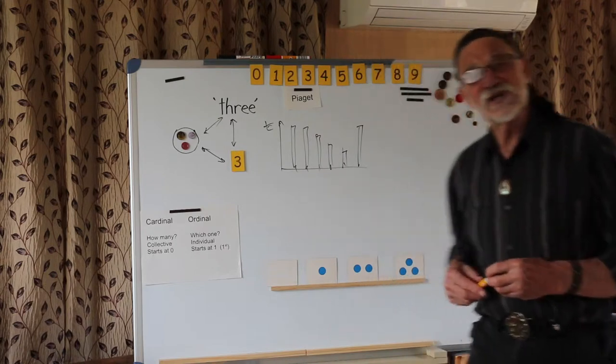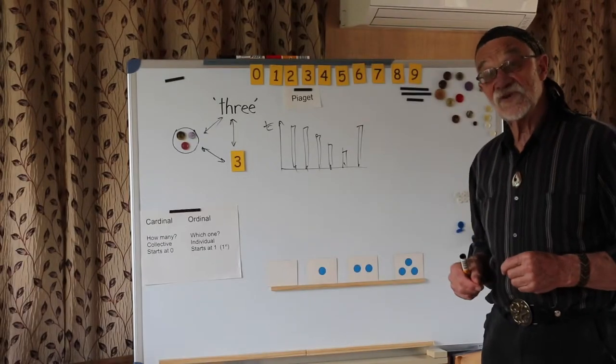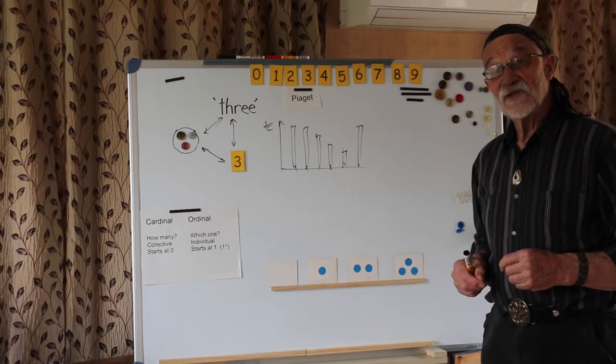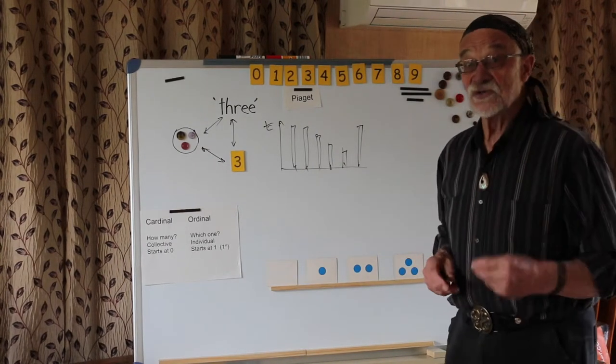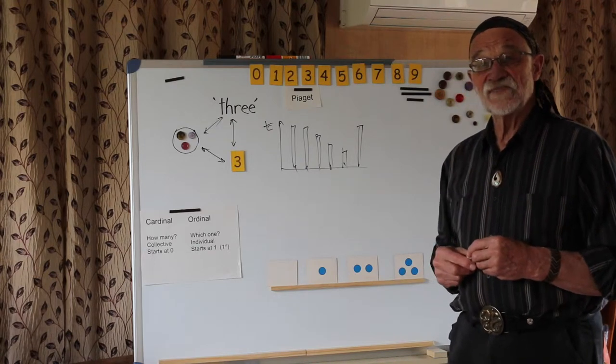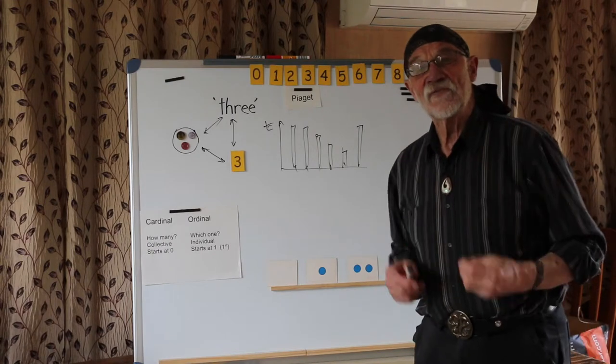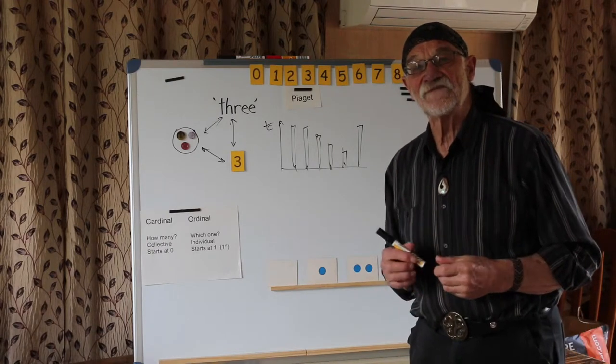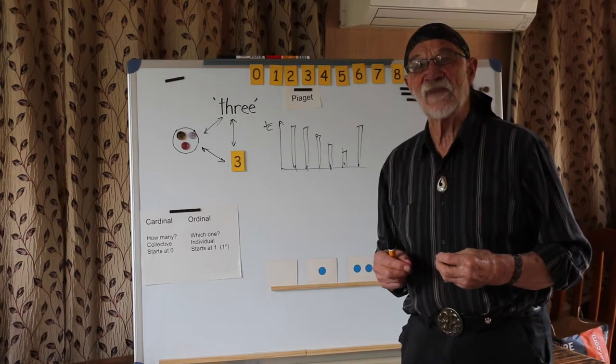How would that influence the way that we set about teaching them? We don't need to say one, two, three. We can just say three. And this has definite advantages, two advantages. Firstly, we can do it much earlier because counting is in fact quite a difficult process for a child to learn.